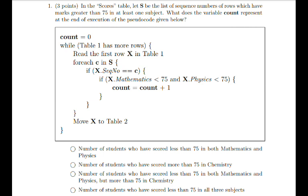Getting into the code, we see that count is initialized to 0. While table 1 has more rows, we read the first row x in table 1. For each C in S, if x.sequenceNumber is equal to C, and if x.mathematics less than 75 and x.physics less than 75, we increment count by 1. Then we move this x to table 2.